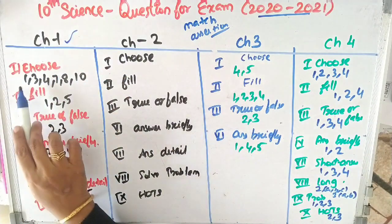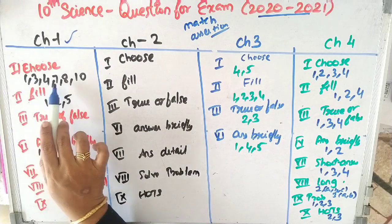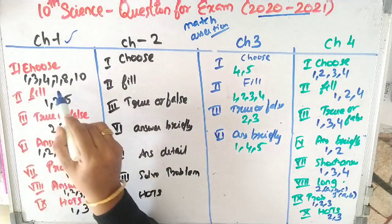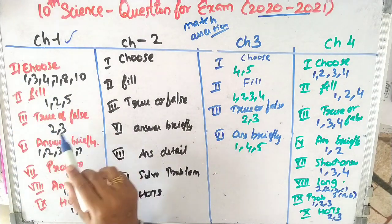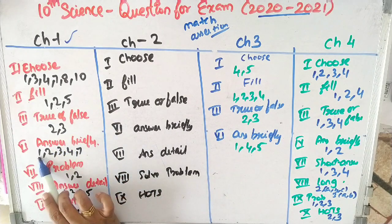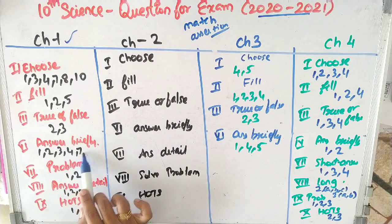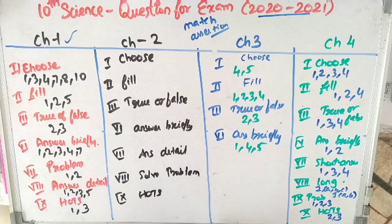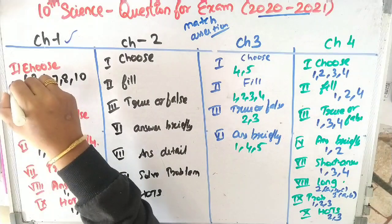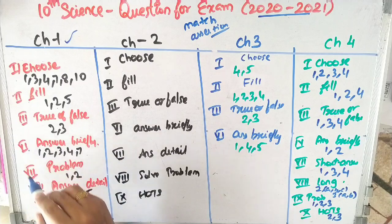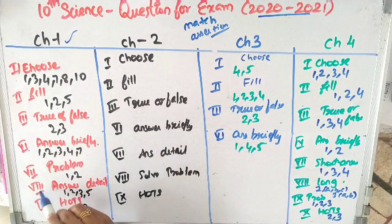In chapter 1, in the first Roman numeral section, questions 1, 3, 4, 7, 8, 10. Roman numeral 2: questions 1, 2, 5. Roman numeral 3: questions 2, 3. Roman numeral 6: questions 1, 2, 3, 4, 7. Roman numeral 7: questions 1 and 2. Roman numeral 8: questions 1, 2, 3, 5.